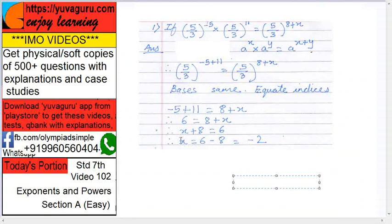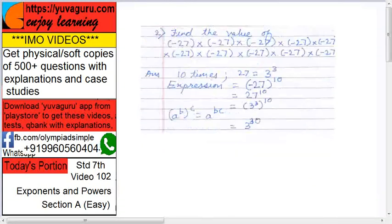Find the value of minus 27 into minus 27, this minus 27 ten times. We have to find the value. Now it seems to be difficult, but it is not so. Here, it is 10 times, but what is 27? Now 27 is 3 cube. 3 square is 9, 9 times 3 is 27, okay?